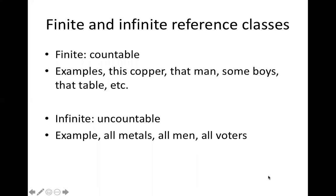We need a clarification about finite and infinite reference classes. The finite reference class is a class of countable items — examples: this copper, that man, some boys, that table. The infinite reference class is a class of uncountable items — examples: all metals, all men, all voters.